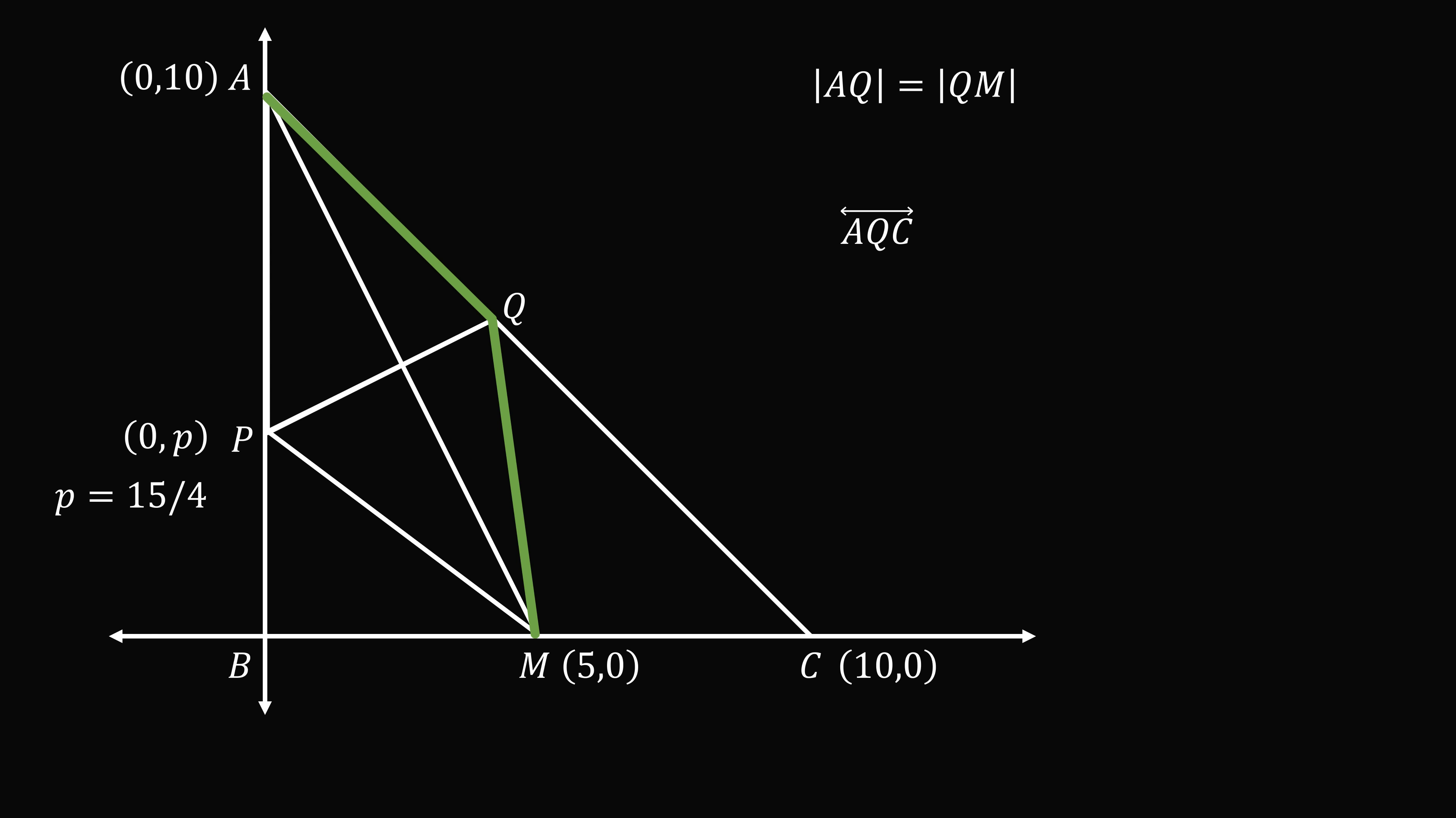We'll use the slope-intercept formula, y is equal to mx plus b, where m is the slope and b is the y-intercept. Now, we already know the y-intercept is equal to 10, so b is equal to 10. We know that C is at 10 comma 0, so we could figure out the slope between these two points. So it will be the change in y-coordinates divided by the change in x-coordinates. So we have 0 minus 10 divided by 10 minus 0. That will be equal to negative 1. So we have the equation y is equal to negative x plus 10.